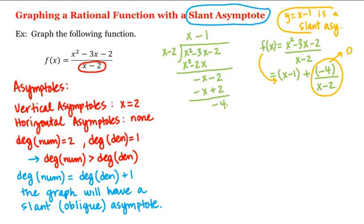So we have this slant asymptote here, and we found we have the vertical asymptote x equals 2, and that there is no horizontal asymptote. Now that we have our asymptotes, let's find a few points on our graph on either side of this vertical asymptote.